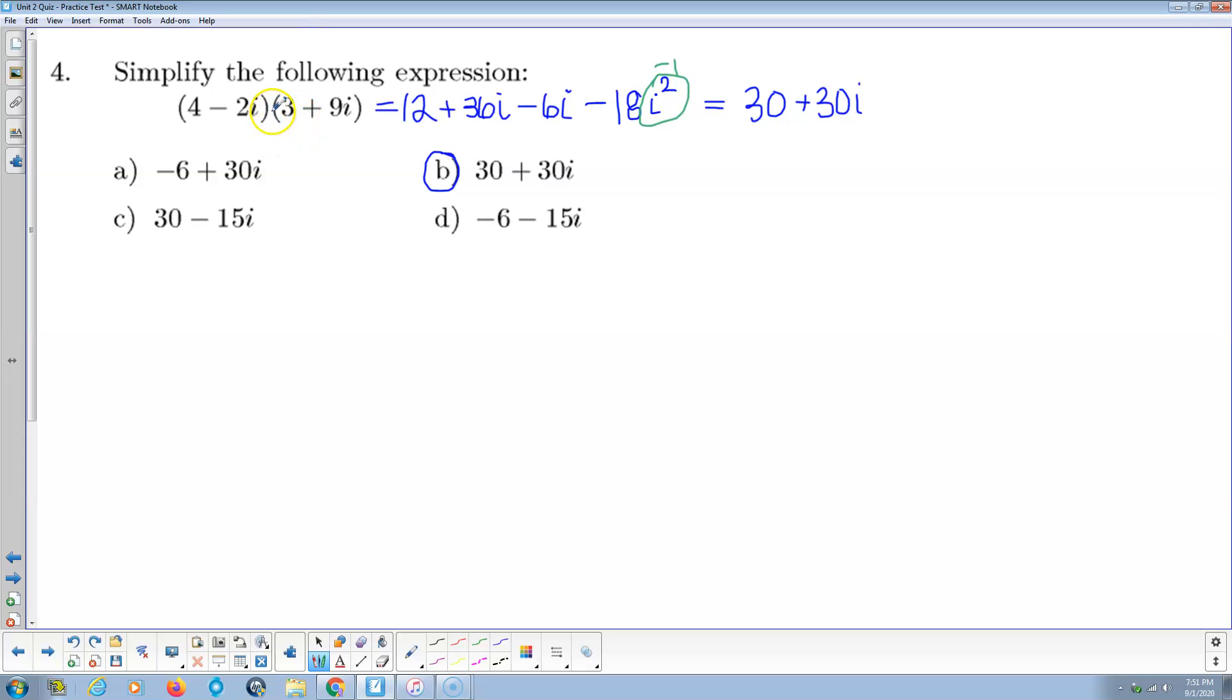Simplify the following expression. Notice we're multiplying two complex numbers. I just distribute when I multiply. Always. You don't have to remember any rules for multiplying, any acronyms like FOIL like some teachers teach. Just distribute. That's all multiplying is. All the time, every time we distribute. So we distribute 4 to both these guys. 4 times 3 is positive 12. 4 times 9i is 36i.